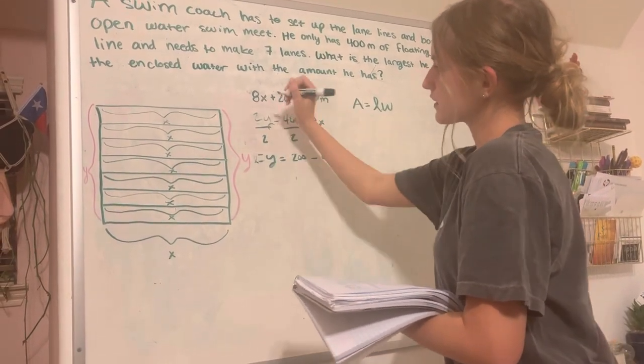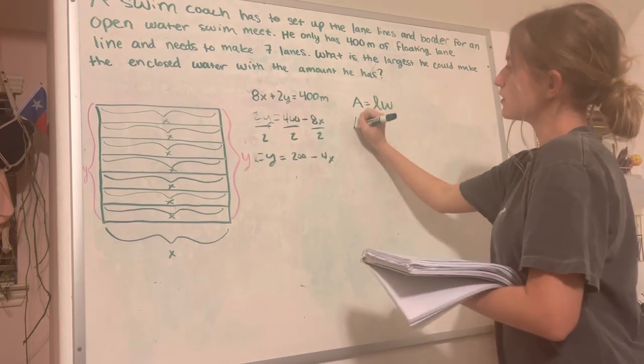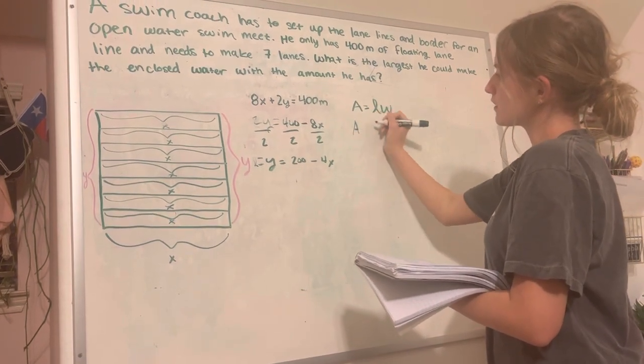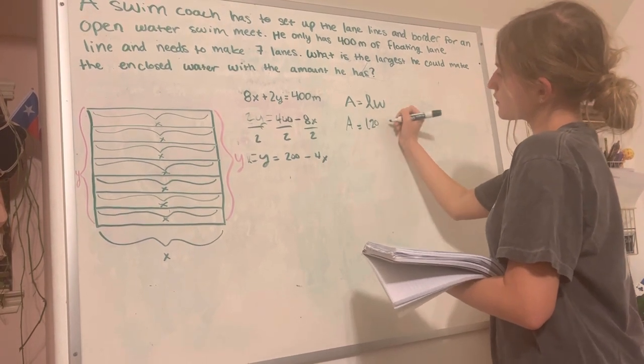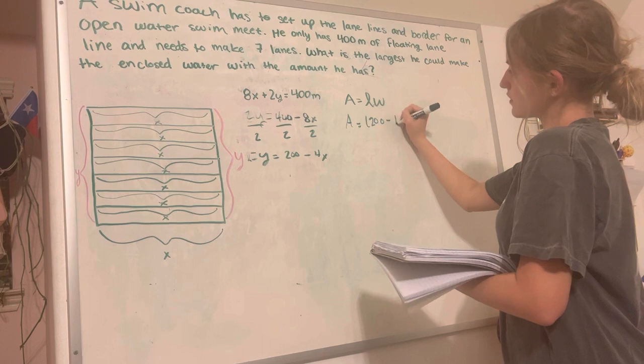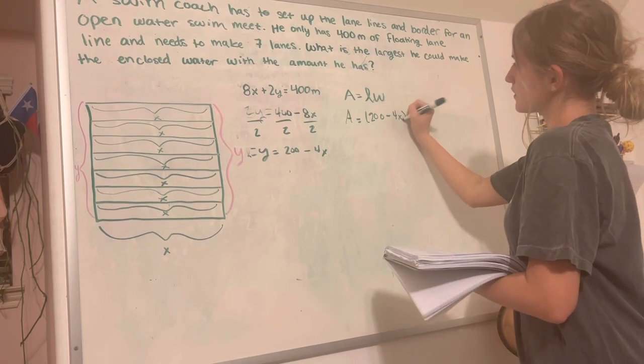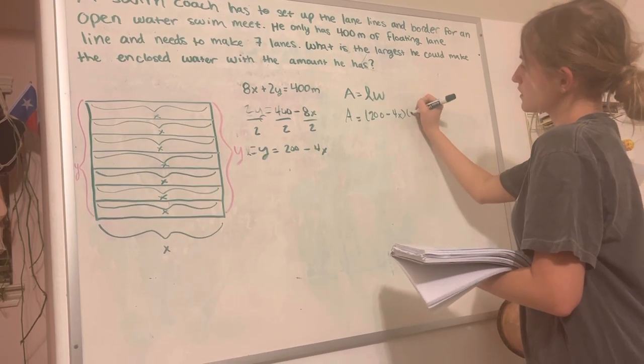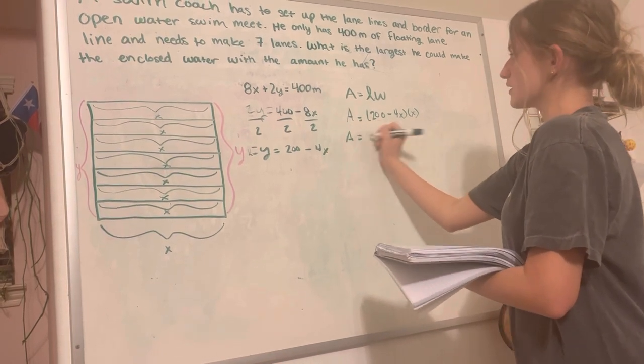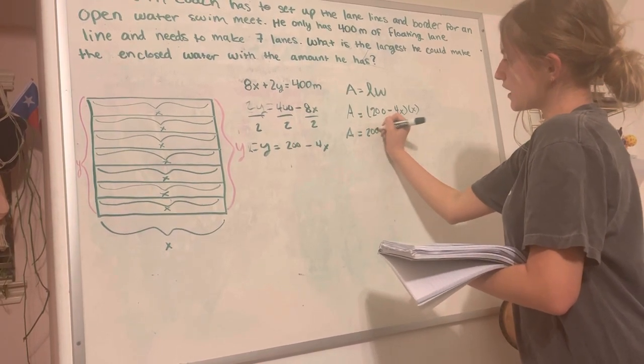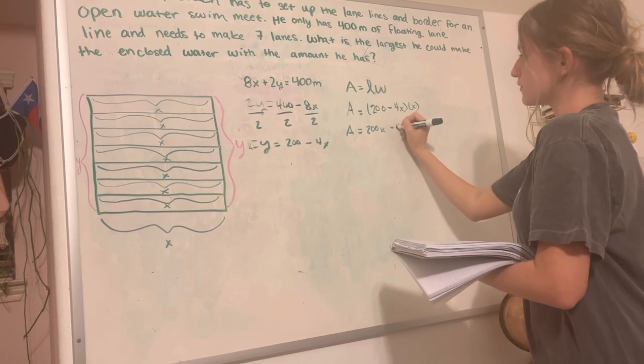Our y is going to be equal to our length, and our x is equal to our width. So a is equal to 200 minus 4x times x. So the area is going to be equal to 200x minus 4x squared.